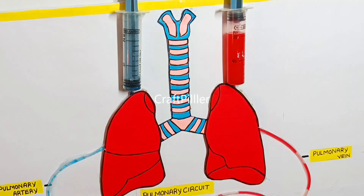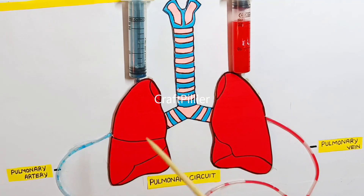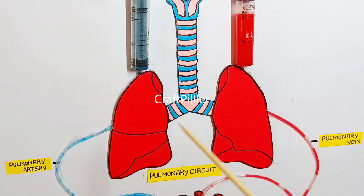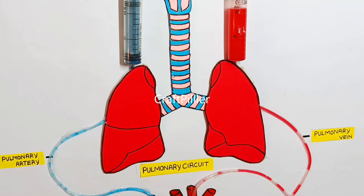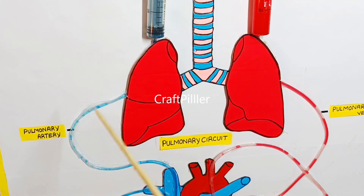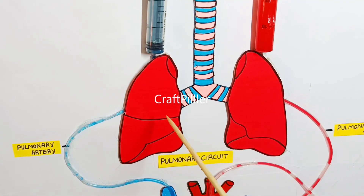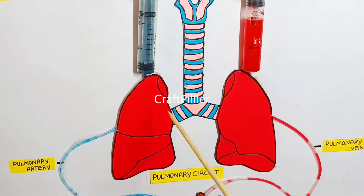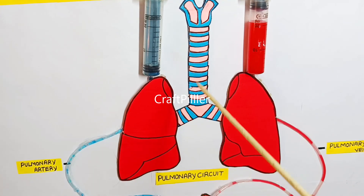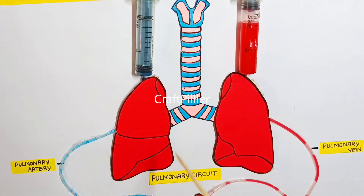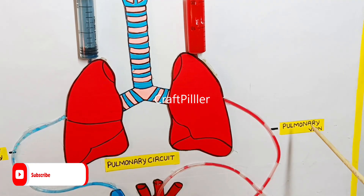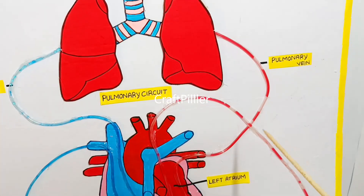The blood circulatory system works as follows: deoxygenated blood comes from the various parts of the body to the heart, and from the heart it goes to the lungs via the pulmonary artery. Whatever oxygen we inhale gets mixed with this blood.